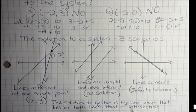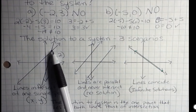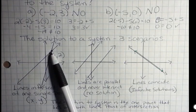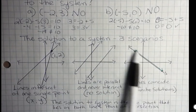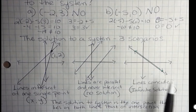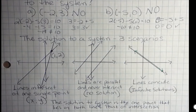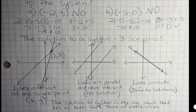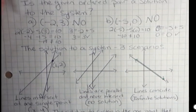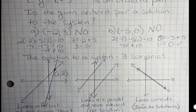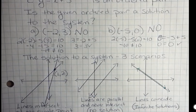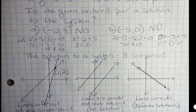So those are the three things that can happen. You can have two lines that have a point of intersection, have no points of intersection, or have an infinite number of intersections. And again, a system, it's a solution to a system if you find an ordered pair that works for both. If it doesn't work for both, then it's not a solution. That's the first video. We'll be on to new things in the next one.